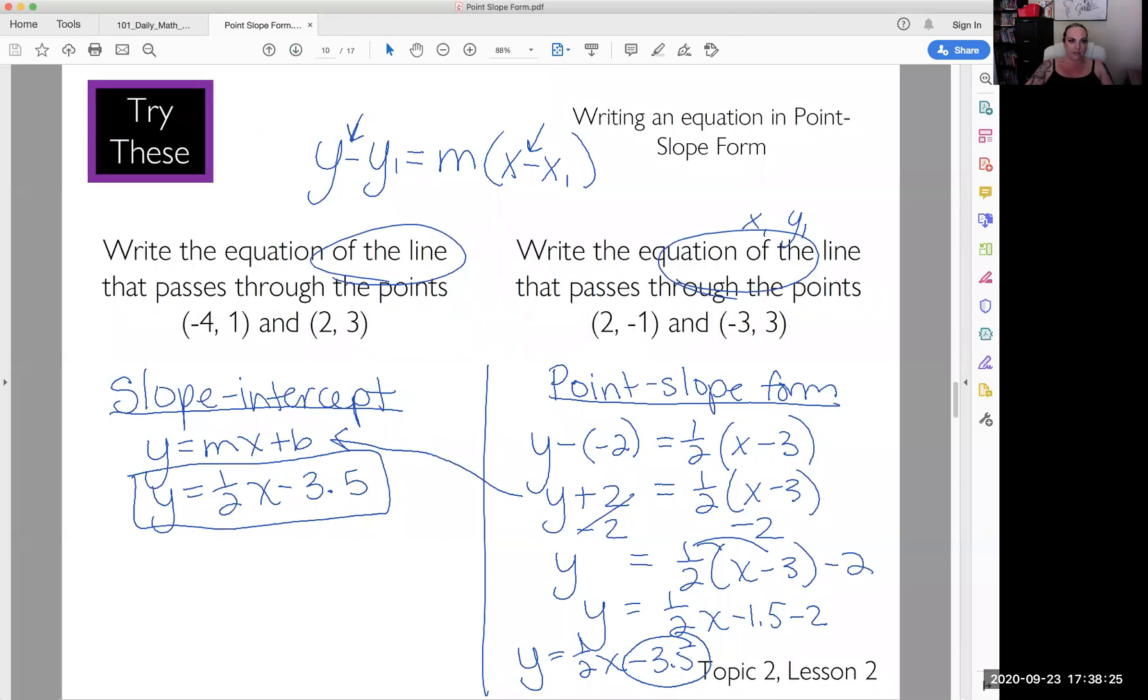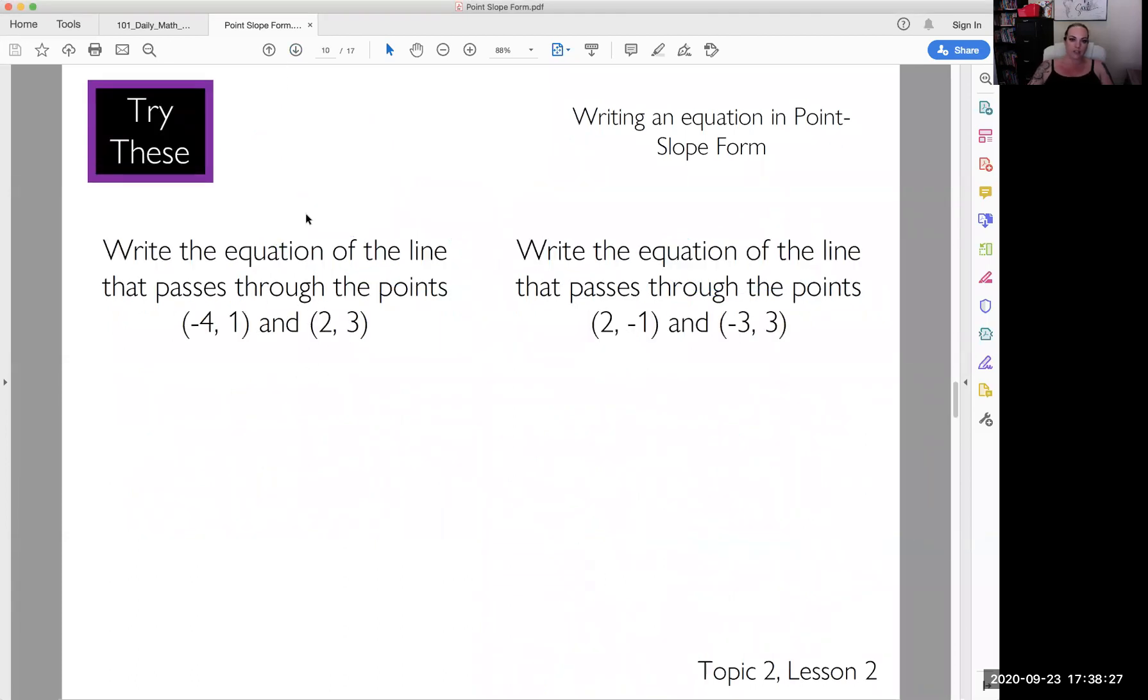Let me clear this. So I want you to try these now. I'll give you a head start on the first one. This is something that we did in the last unit or the last lesson where we were given two points and we needed to find the slope. And we could write this in slope intercept form. So just finding the slope first.